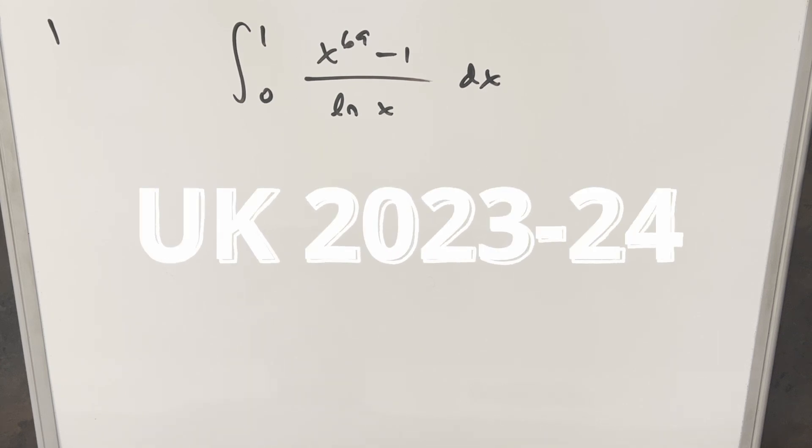Okay, we have another integral. This one's from the UK Integration B, 2023-2024, problem one. We have the integral from zero to one of x to the 69 minus one over ln x dx.